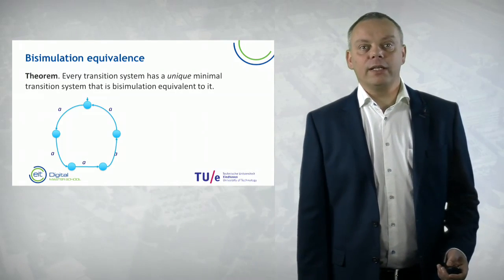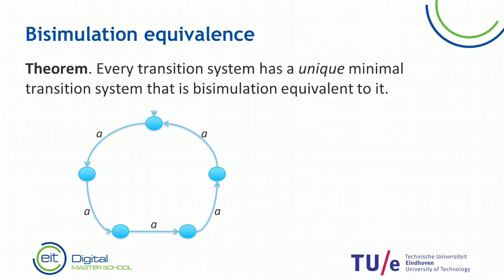Let's look at an example. Here we have a transition system that can do five A's and then repeats itself again — it can typically exhibit the behavior of doing an infinite number of A's. There is a much simpler transition system, namely a single state with a self-loop, that can also do an infinite number of A's.